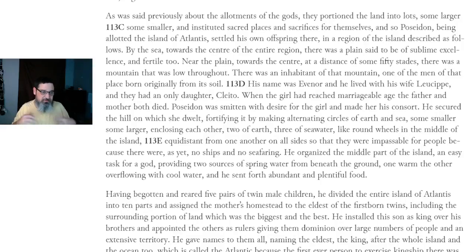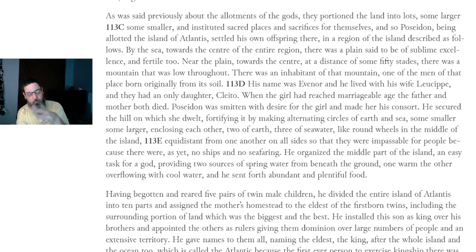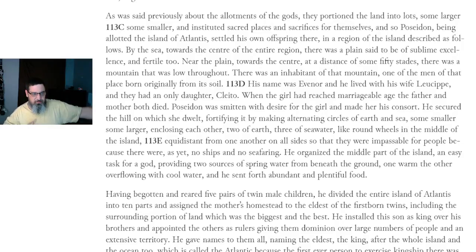By the sea, towards the center of the entire region, there was a plain said to be of sublime excellence and fertile too. Near the plain, towards the center, at a distance of some 50 stades — a stade is roughly 600 feet, so that would be about 30,000 feet — there was a mountain that was low throughout, and there was an inhabitant of that mountain, one of the men of the place, born originally from its soil.